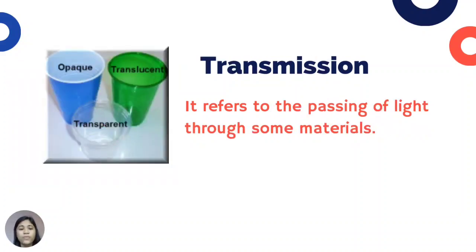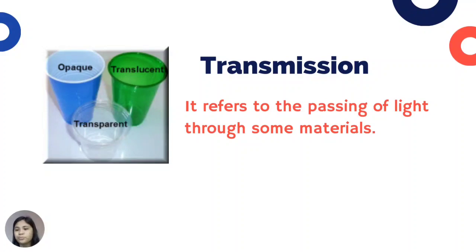Transmission refers to the passing of light through some materials. For example, when light passes through a glass window, it is transmitted to the other side, allowing the light to pass through the window.